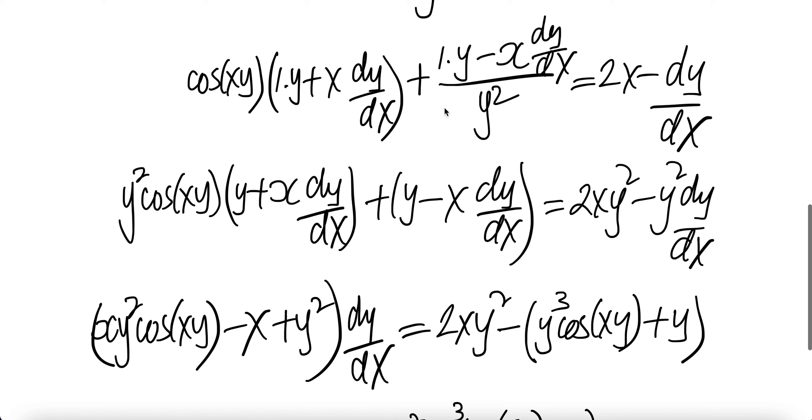Now multiply everywhere with y squared. Be y squared times this, this is gone, and then you'll be 2xy squared minus y squared dy/dx.